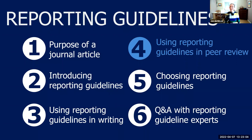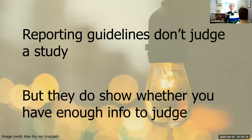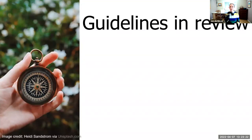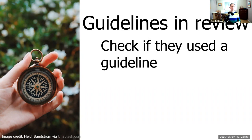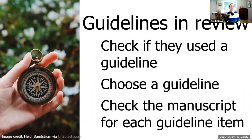Reporting guidelines can also be very helpful in peer review. They can't help you judge whether a study made a sensible decision, but they can help you figure out if you've been given enough information to make a judgment. Step one: check whether the manuscript cites a reporting guideline, read the abstract, and see if you agree with their choice. If not, or if they haven't used one, choose an appropriate reporting guideline, then compare the manuscript to the guideline to see whether every item has been reported or is clearly not applicable.